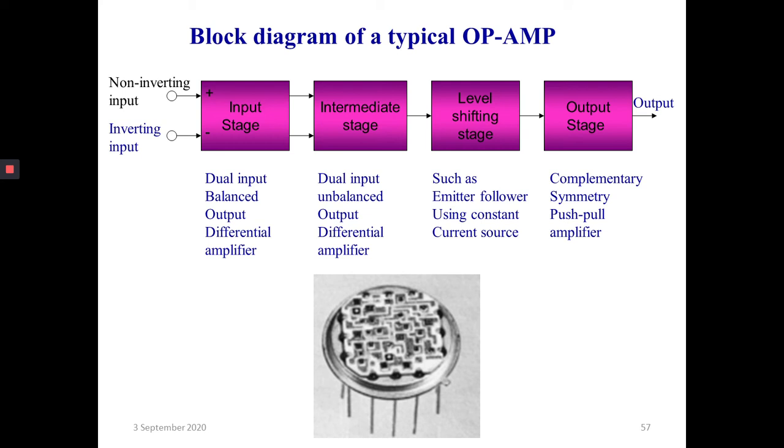Next block is the intermediate stage. It is another differential amplifier driven by the output of the previous stage. This will amplify the output of the first stage. As direct coupling is used, the intermediate stages are mostly dual input and unbalanced output. The output is unbalanced because direct coupling causes both DC and AC parts to get amplified.